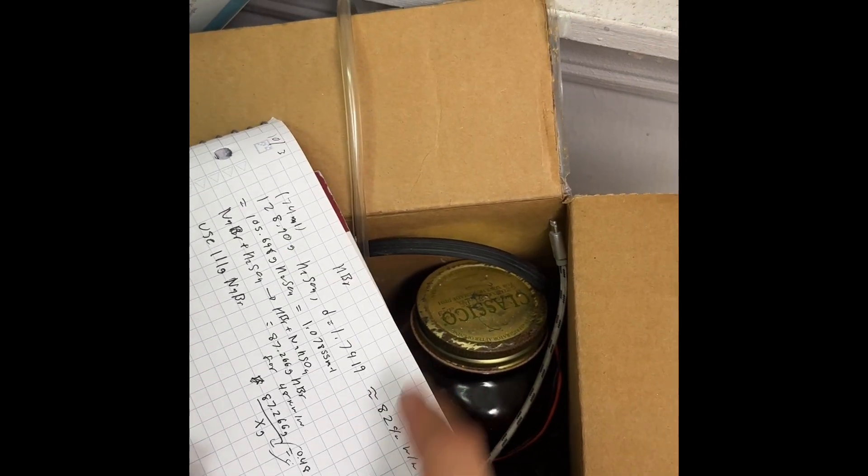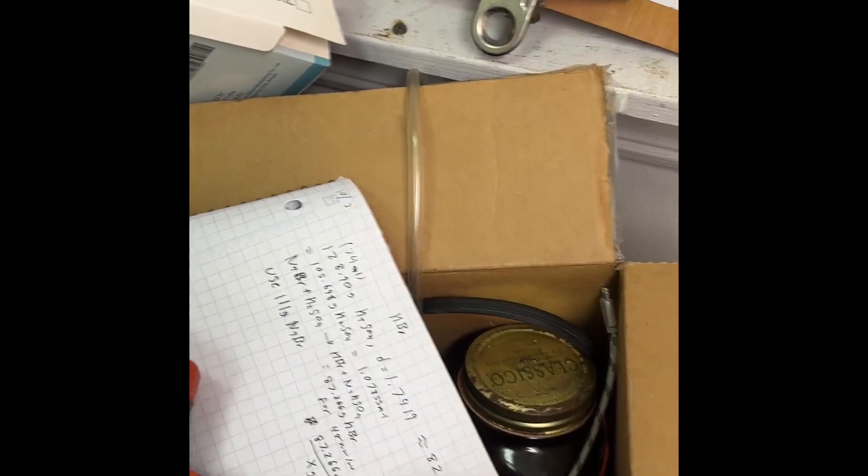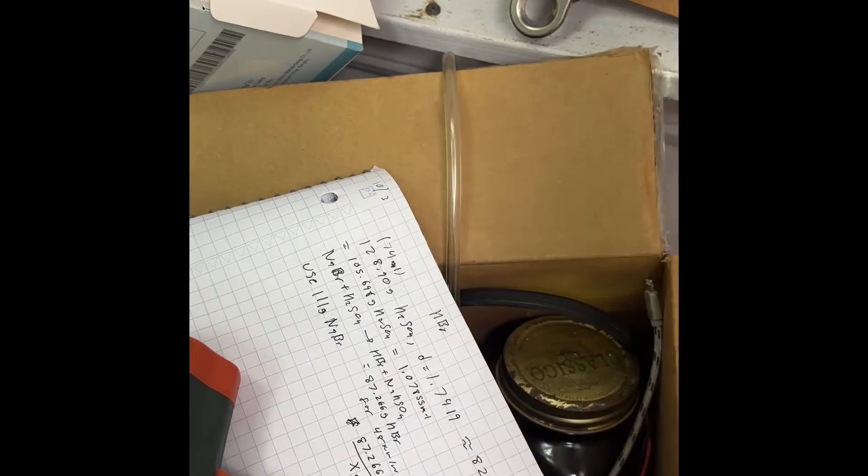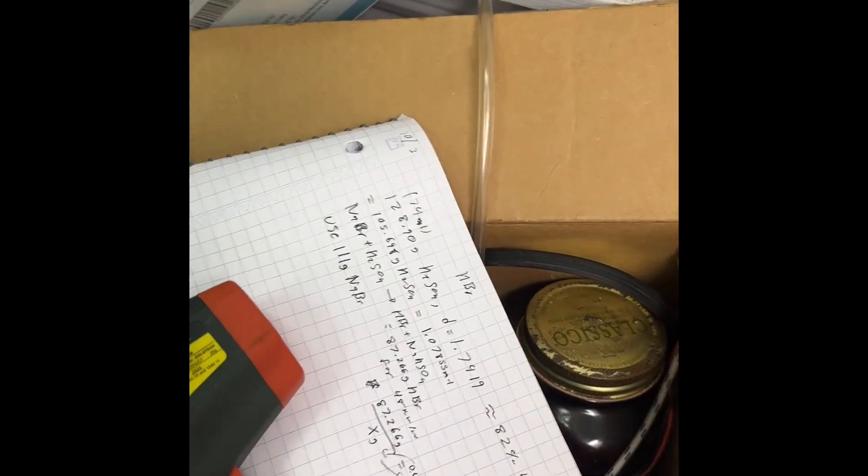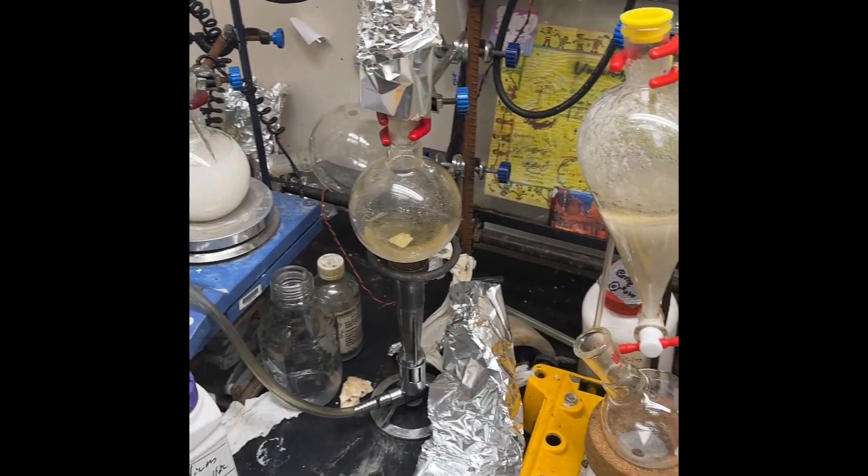Adjust for the amount of water in your acid. If you're using 98%, it's negligible. If you're using diluted acid like I am, because my drain cleaner is not always the same concentration, adjust for that. You can omit the water of hydration for the sodium bisulfate because it's going to dehydrate at the temperatures we're distilling it.